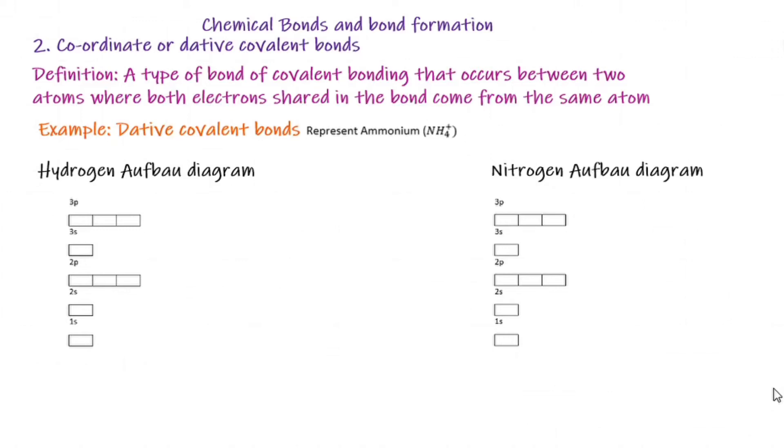Hi there and welcome back. We are still looking at chemical bonds and bond formation. We just looked at covalent bonds, now we are going to look at coordinate or dative covalent bonds. For reference, I'll be referencing the Ziavila textbook. By definition, it's a type of bond of covalent bonding that occurs between two atoms where both electrons shared in the bond come from the same atom.